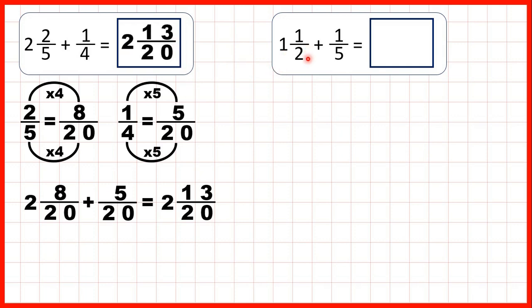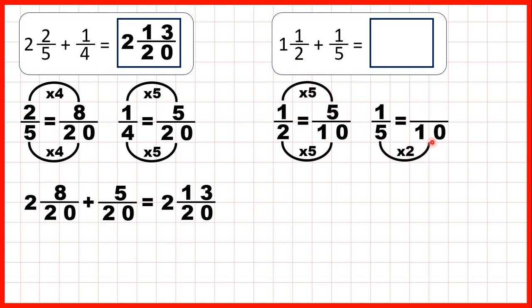Now we have 1 and a half plus 1 fifth. So the lowest common multiple of 2 and 5 is 10, so we can find equivalent fractions to a half and a fifth which both have a denominator of 10. 2 times 5 is 10, 1 times 5 is 5, 5 times 2 is 10, and 1 times 2 is 2.